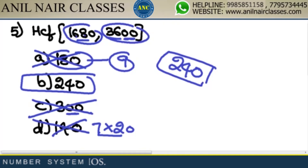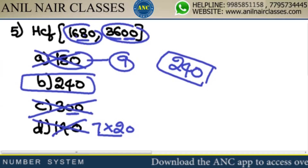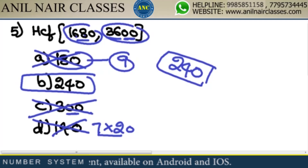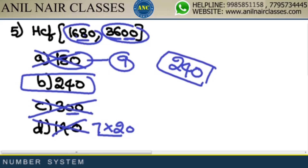Again: do not use the definition of HCF to solve these. For 1680 and 3600 — 300 is out because 3600 is divisible by 100 but 1680 is not. 180 is out because 1680's digit sum is not divisible by 9. 140 is out because 3600 is not divisible by 7. Answer is 240.